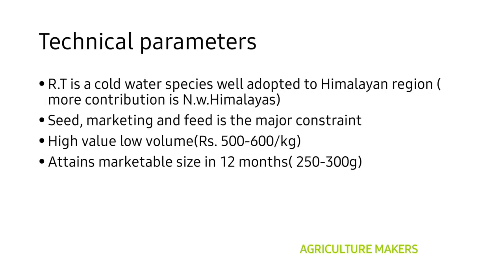Coming to the technical parameters, rainbow trout is a cold water species requiring only 10 to 18 degrees centigrade of water temperature. Due to its cold-temperature nature, it is well adapted to the Himalayan regions. The northwestern Himalayas contribute more in the production of rainbow trout — 81.2% of total trout production comes from the northwestern Himalayas compared to the mid and western Himalayas. The main constraints in the culture of rainbow trout are the availability of seed, feed, and marketing.